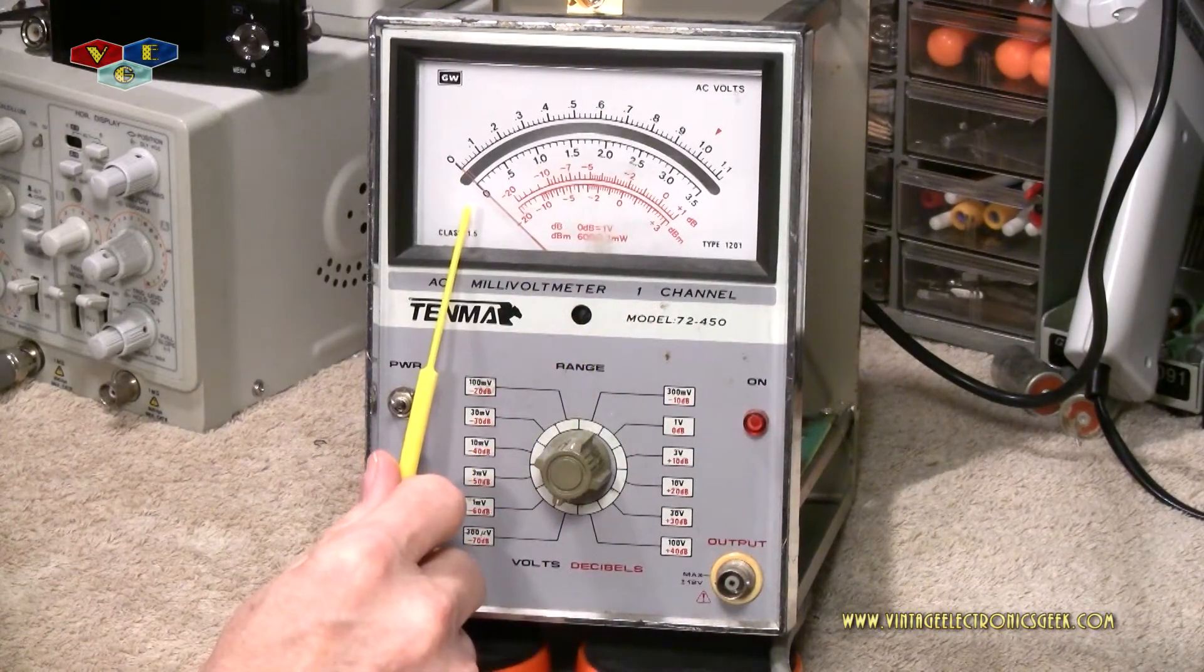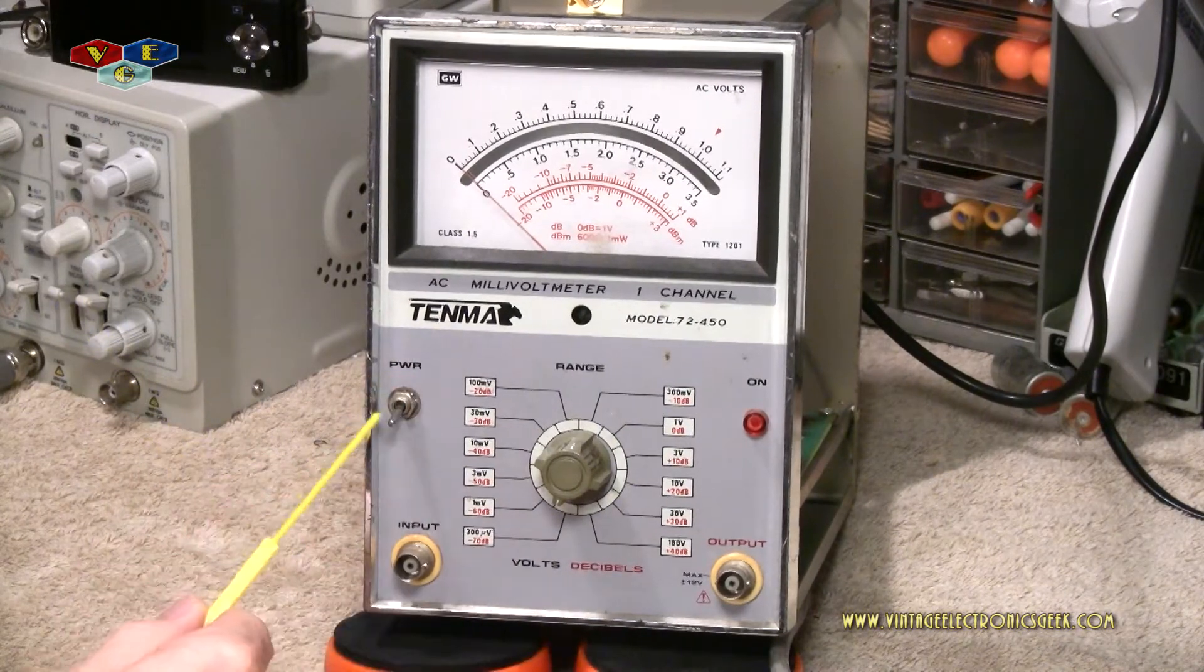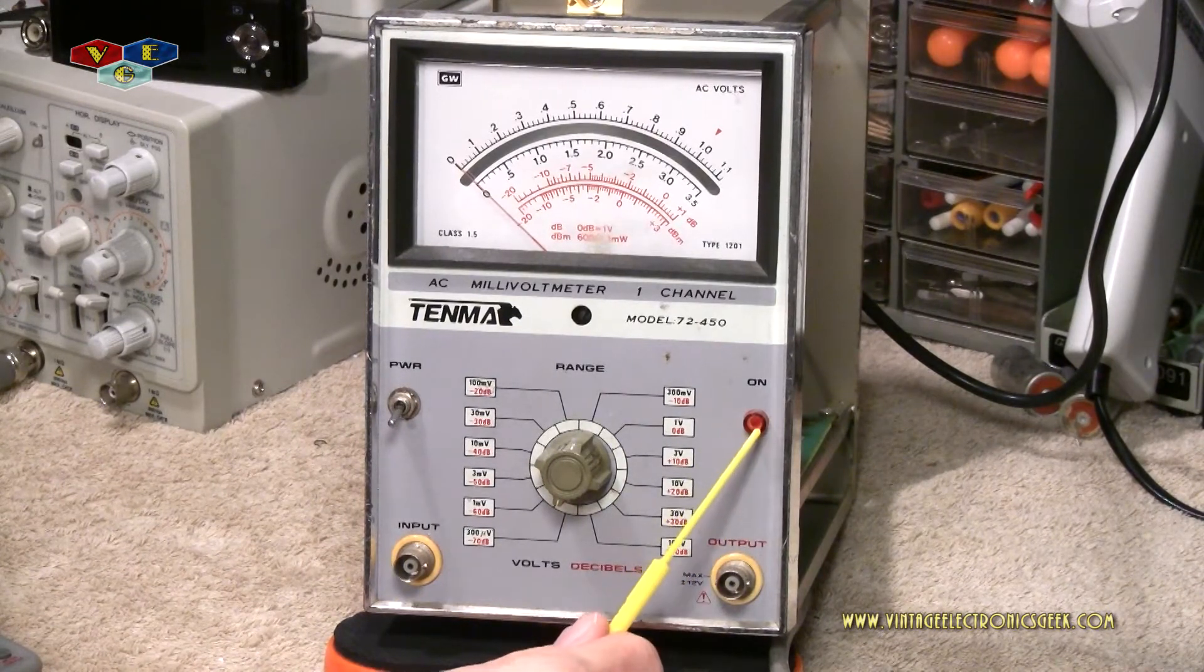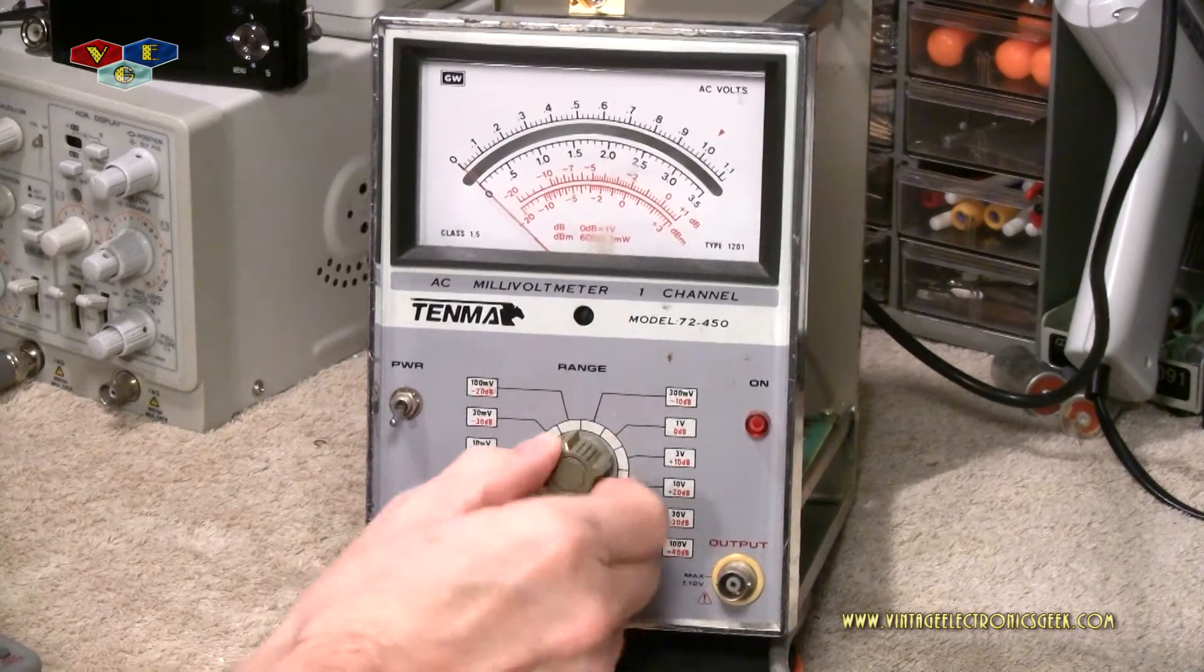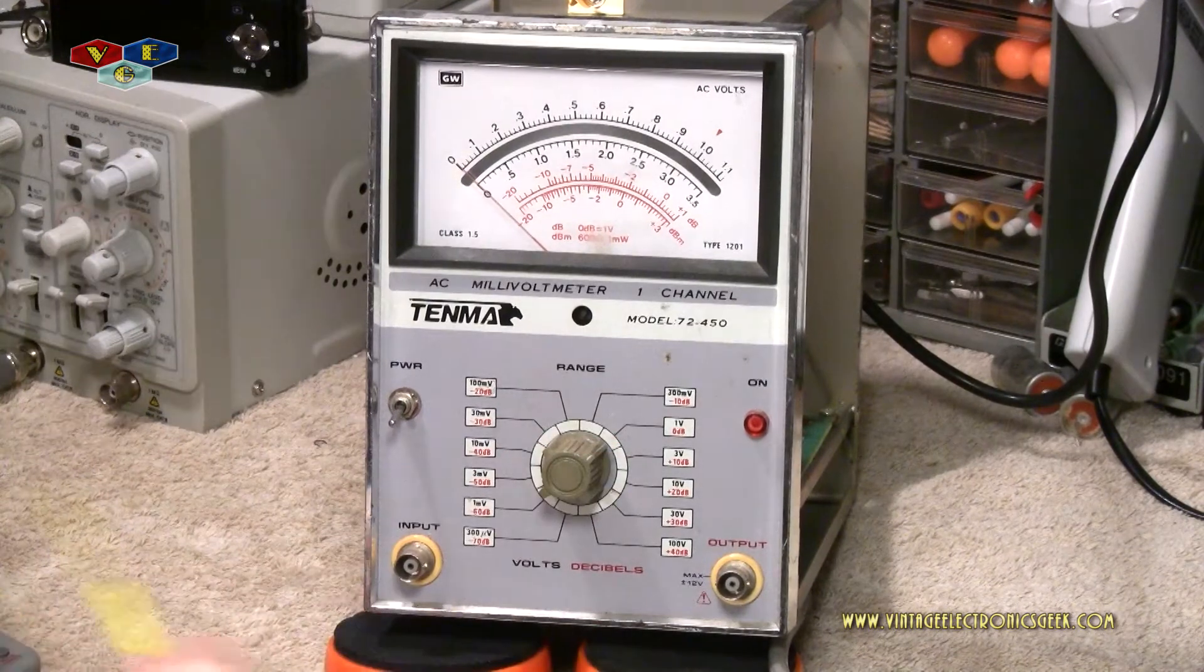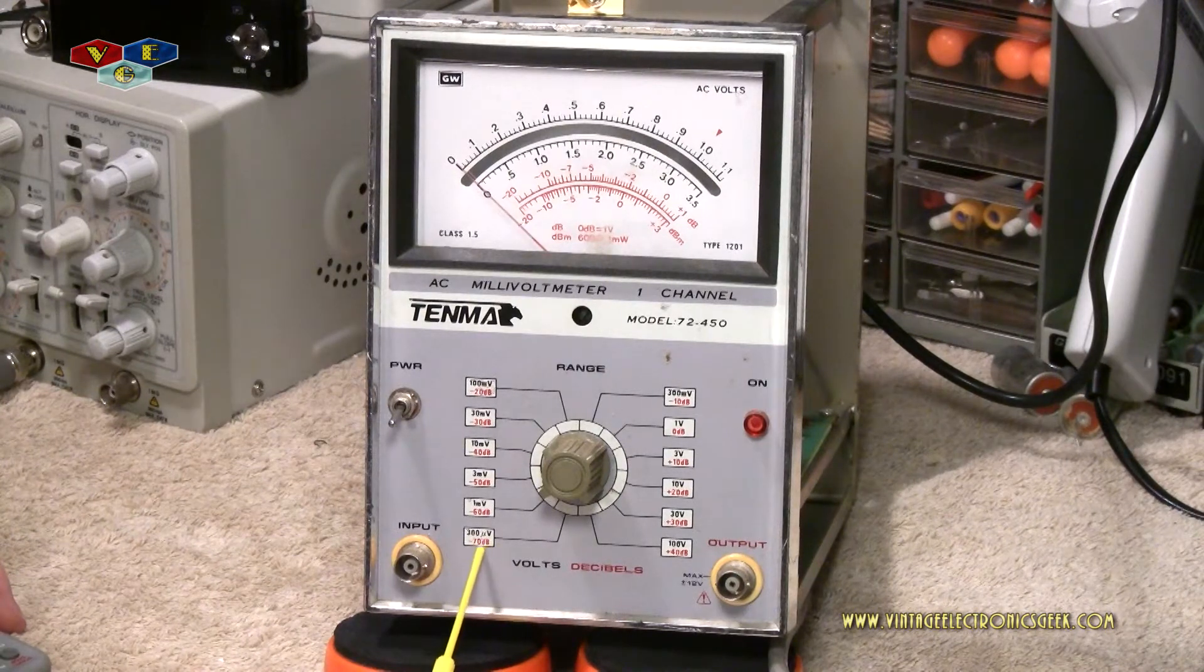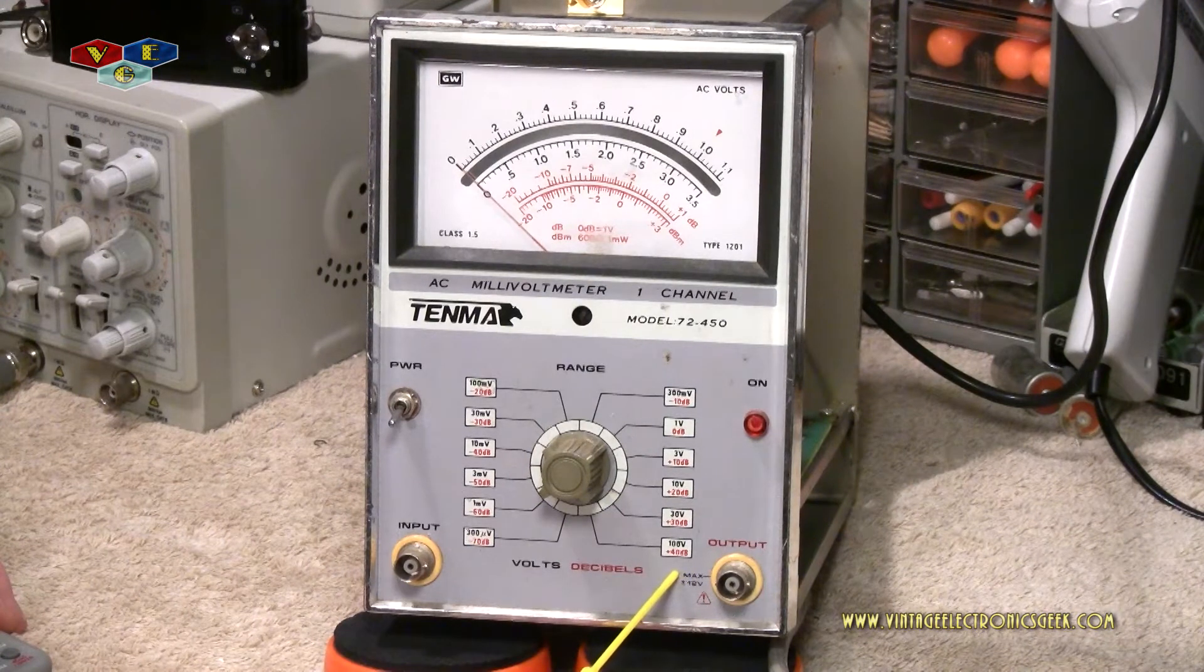Then of course AC volts. Right here we have a little screw set that will calibrate the meter. We have our power switch, we have a BNC in and a BNC out, we have our power indicator light, and then we have our control switch which will take us through the various ranges.